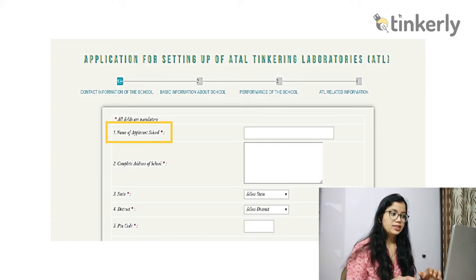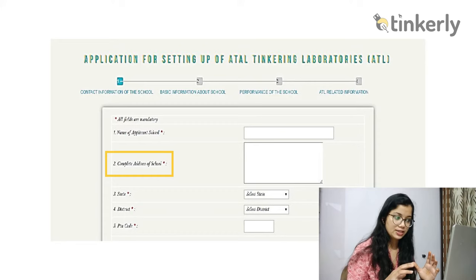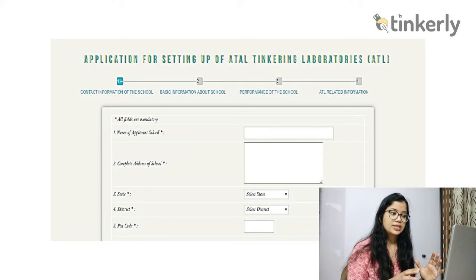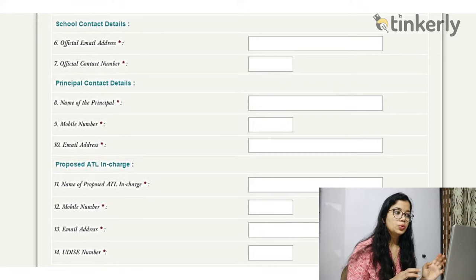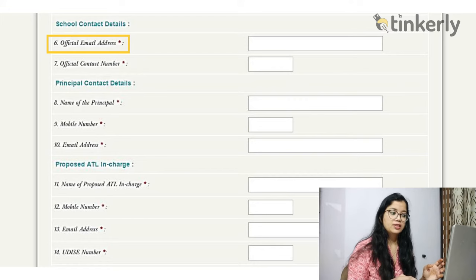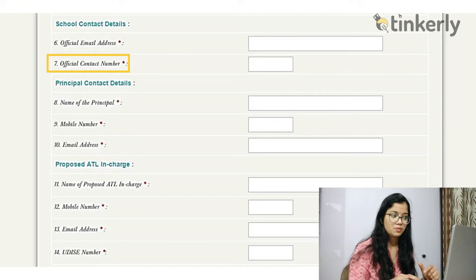Next is the complete address of your school, the official address. Then you select your state, district where your school is located, and provide the correct pin code. Then comes school contact details: you provide the official email ID of your school — the same one used during signup — and the official contact number of the school.